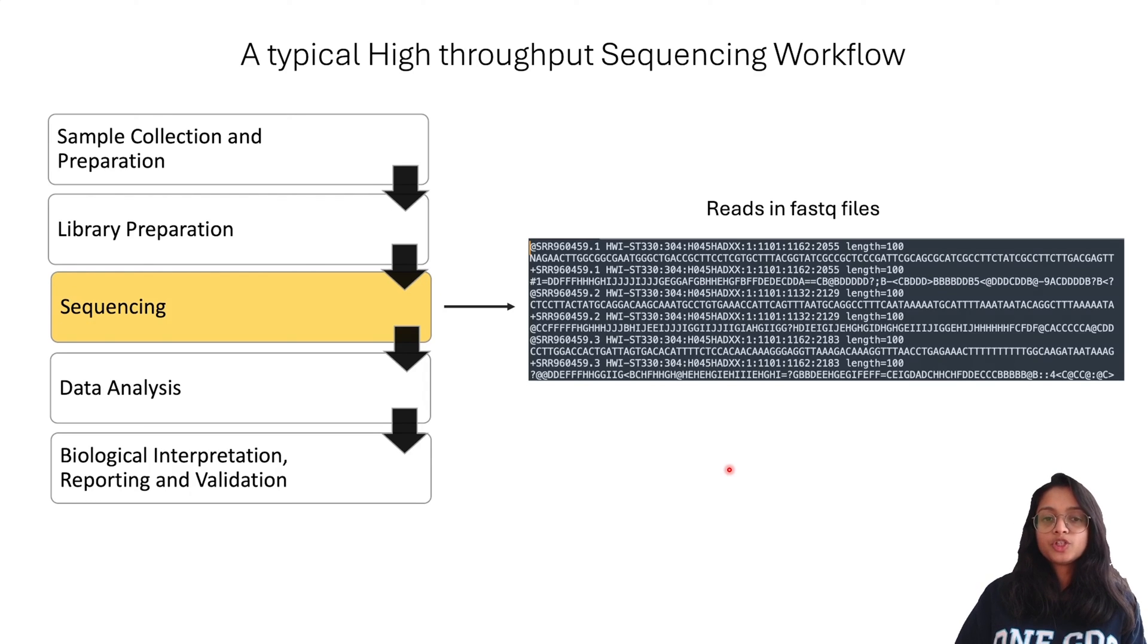From the sequencing machine, what we get is reads. Reads are stored in a file format called FASTQ file, and this is how our FASTQ file looks like. Previously, I have created a video where I have gone over what information is stored in this file format. If you are interested to learn more about that, I will be adding the link to that video in the description section below. This is essentially the raw read files, which are most often the starting point for bioinformatics analysis. From here on, we start with these reads and perform alignment or assembly and further downstream analysis.